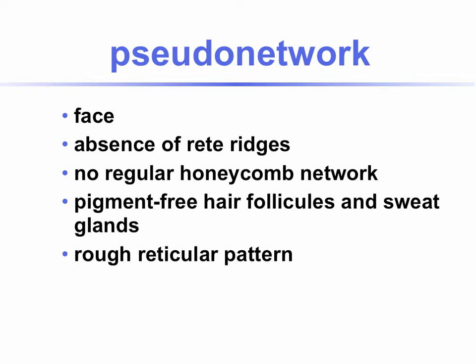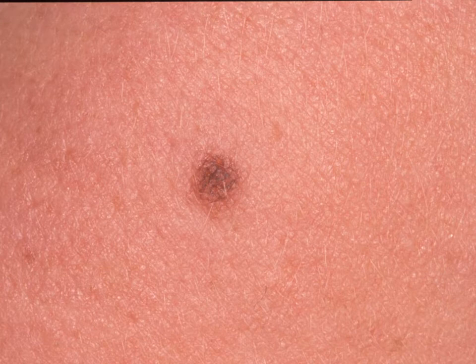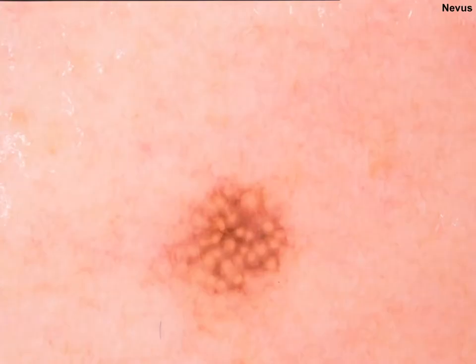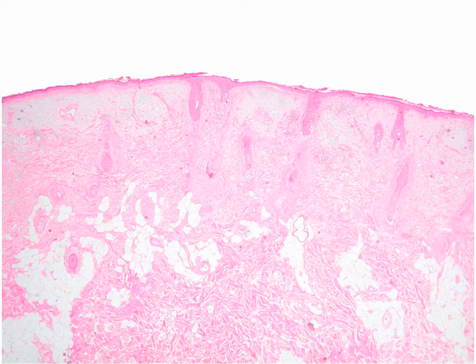Pseudonetwork is a subtype of pigment network found exclusively on the face, the chest, and the dorsum of the hands. This is due to the absence of rete ridges in these areas, which is why we do not see a regular honeycomb-like network. Pigment-free hair follicles and sweat glands make the holes, giving it a rough reticular pattern. Here you see a small benign nevus on the face — dermoscopically, the yellowish sebaceous glands correspond to the holes, producing this pseudonetwork. In histology, we see the adnexal structures but a flat epidermis in between, which is why we have a pseudonetwork rather than the typical honeycomb-like network.